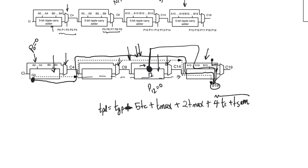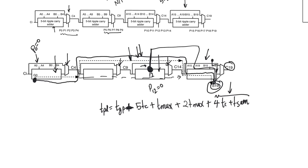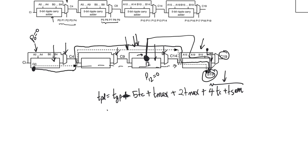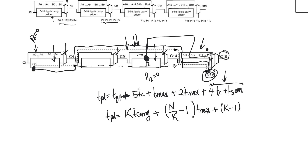The last block must also be all propagating — otherwise the path would be shorter and couldn't be the critical path — but we wait for S19 rather than a carry out, so we use Tsum. Generalizing in terms of N, K, and P, the propagation delay TPD equals K·Tcarry plus (N/K − 1)·Tmux, which is (P−1)·Tmux, plus (K−1)·Tcarry plus Tsum for the delay of the last block.